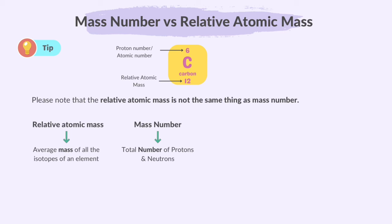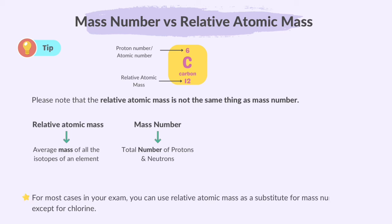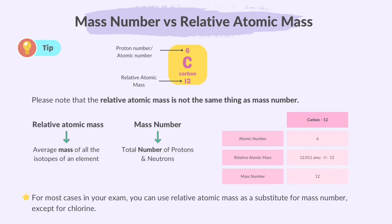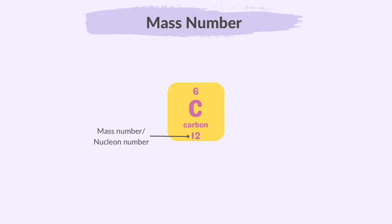Relative atomic mass is often expressed as a decimal number, but for simplicity — except for chlorine — it is rounded to the nearest whole number, making it look like the mass number. Even though they don't mean the same thing, for most cases in your exam you can use relative atomic mass as a substitute for mass number, except for chlorine. For example, carbon-12 has a relative atomic mass of 12.011, but rounded to the nearest whole number it is 12, and the mass number of carbon-12 is also 12 — so you can use the relative atomic mass as the mass number.